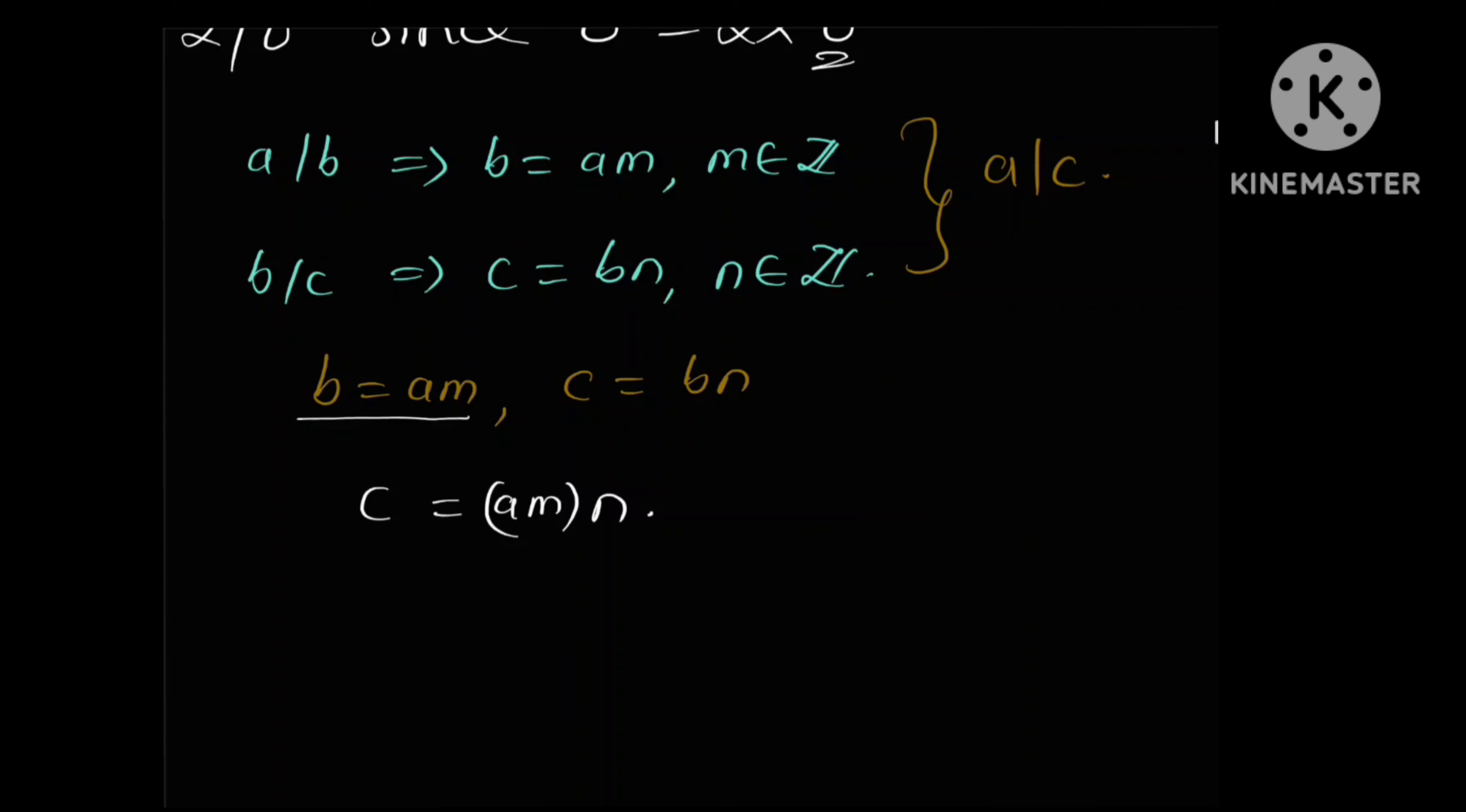And since the multiplication of integers is associative, we can write this as A multiplied by MN, which can also be written as A times P, where P is equal to MN, and this is also an integer, since the set of integers is closed under multiplication.